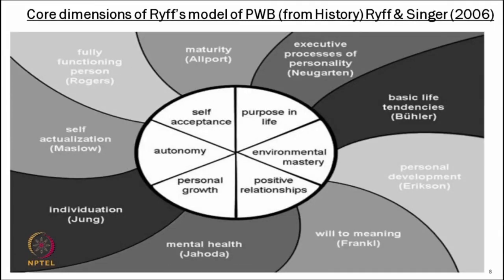For developing this model, Ryff and her associates developed a new model called psychological well-being. She reviewed literature and studied all scholars' positive factors work in psychology — for example, mental health by Jahoda, individuation by Carl Jung, self-actualization by Maslow, full functioning person by Rogers, maturity by Allport, executive processes of personality, basic life tendencies, personal developmental biographies, and will to meaning by Frankl. They considered all those existing factors and proposed a six-factor model.